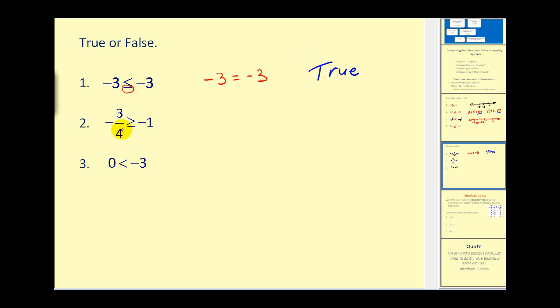Next, again, we'll convert this to decimal notation. So we'd have negative 0.75 compared to negative 1. Negative 0.75 is greater than negative 1. So, of course, it would also be greater than or equal to. Again, this is true.